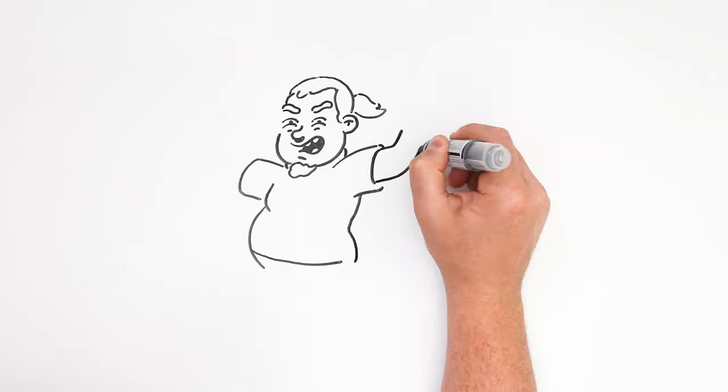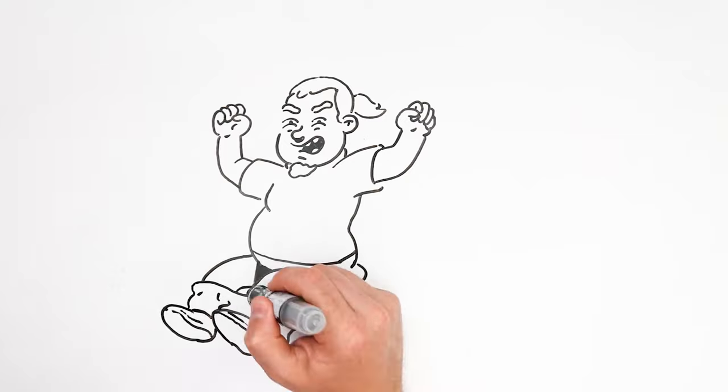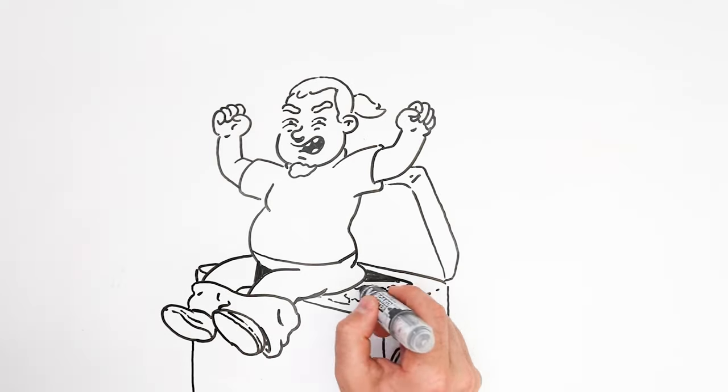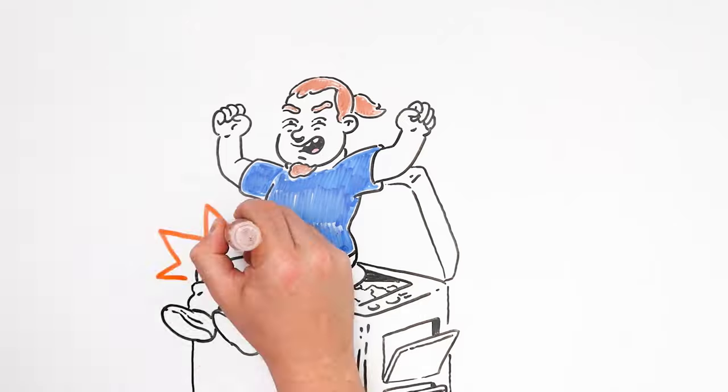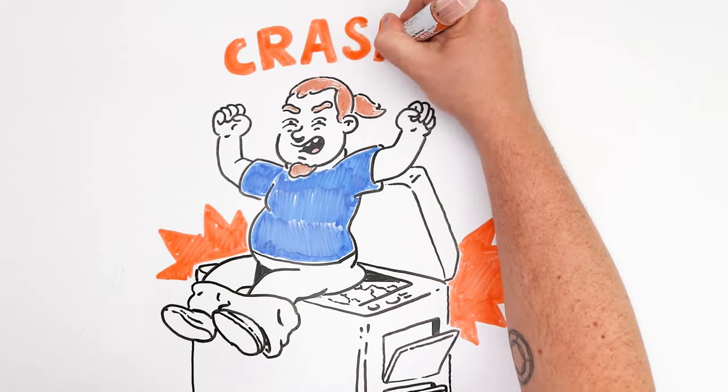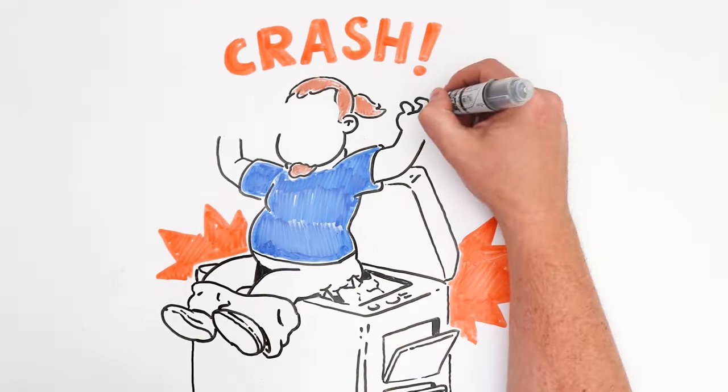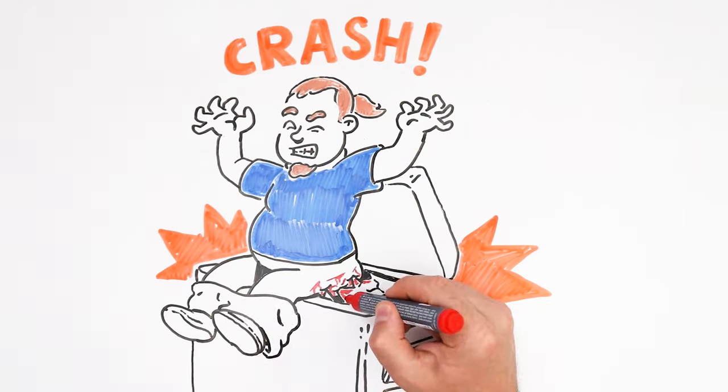And once again, Norman started making a monumental tantrum. He started hitting the machine so much, moving from one side to the other, that the glass of the surface finally broke, making Norman fall and get stuck in the machine, getting cuts and bruises in the process.